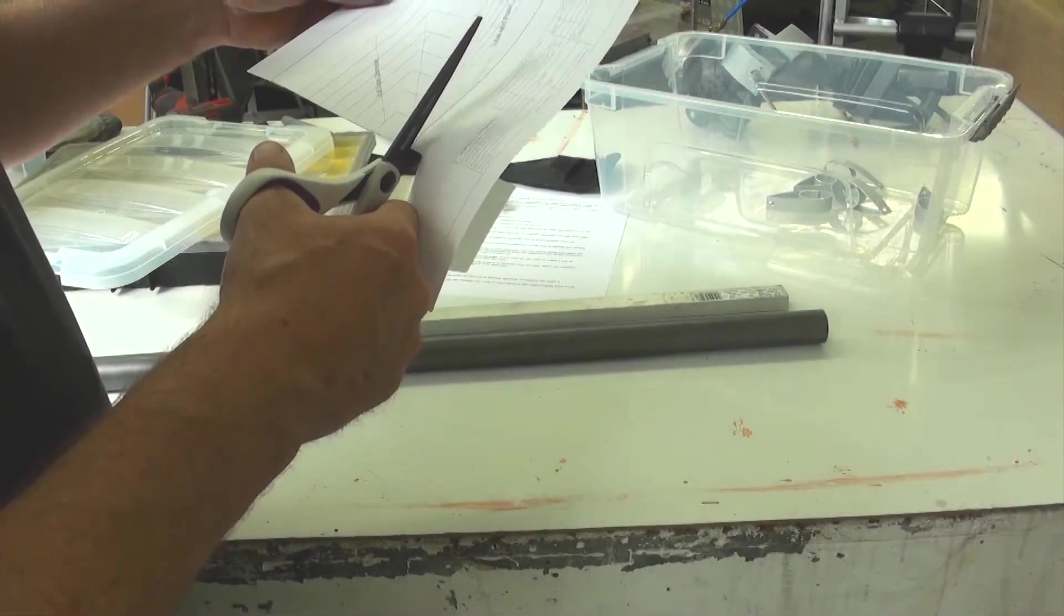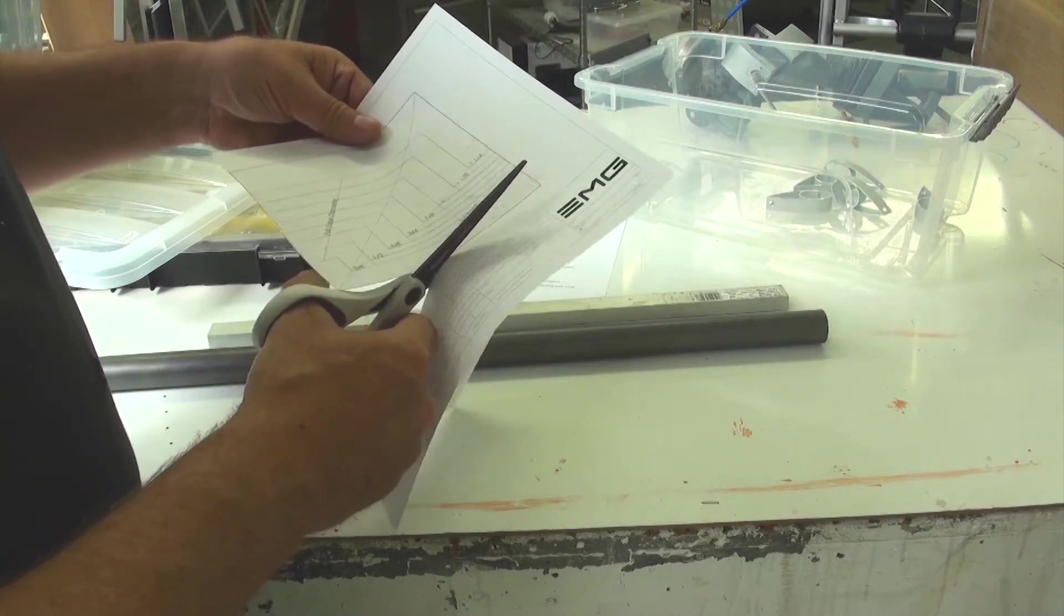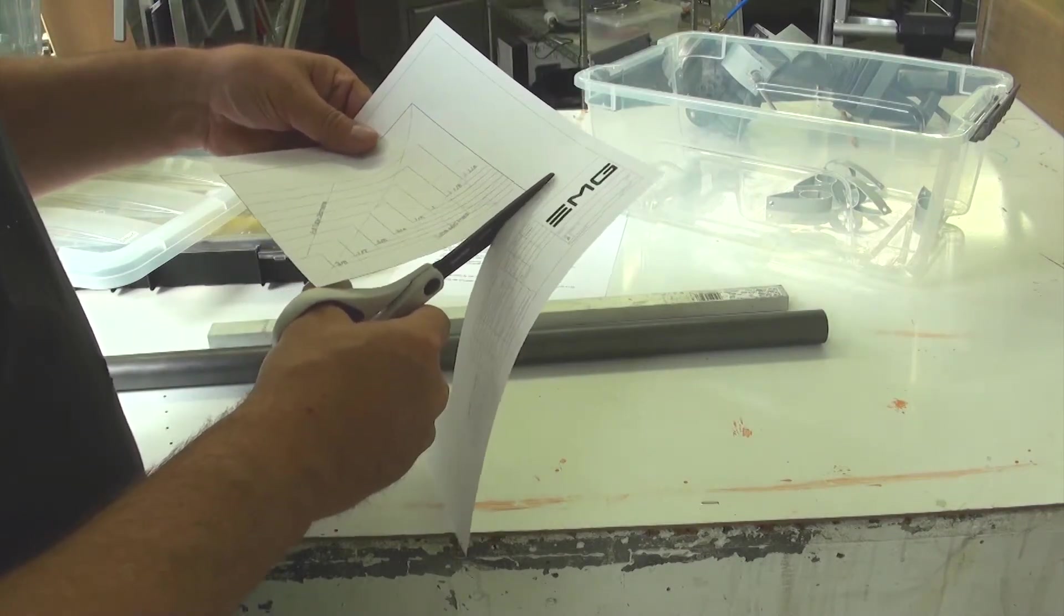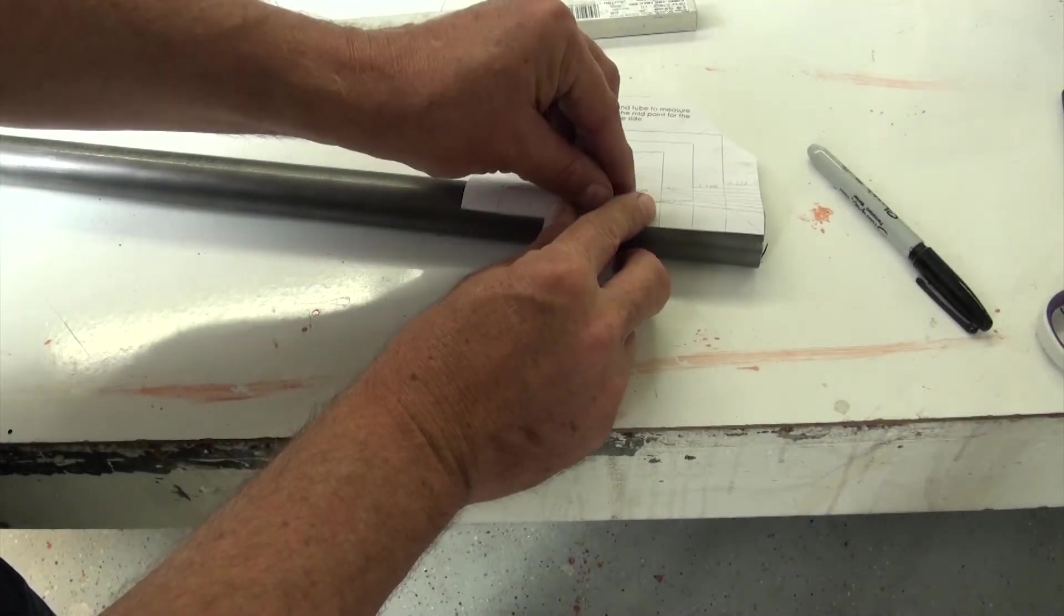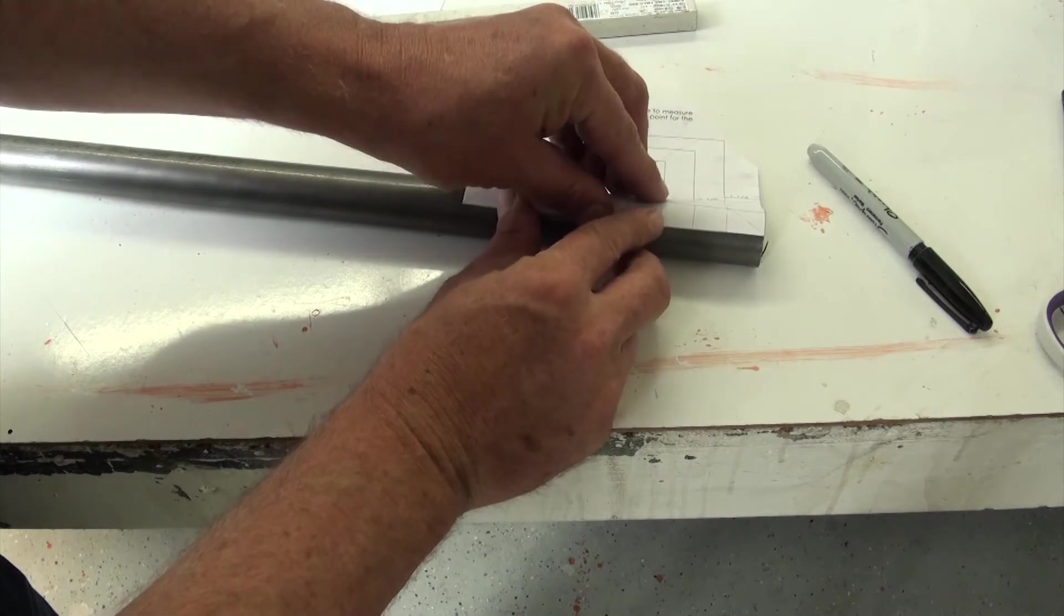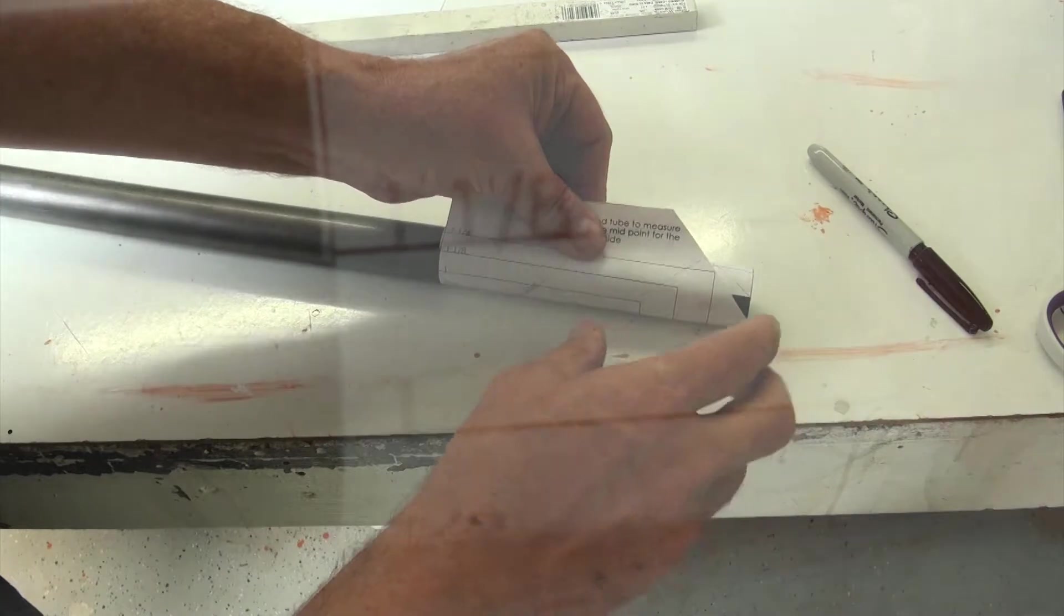Open the PDF file and print it at 100% scale. Cut out the template with a pair of scissors. Simply wrap the template around the diameter of the tube and read the diameter on the left side of the template.